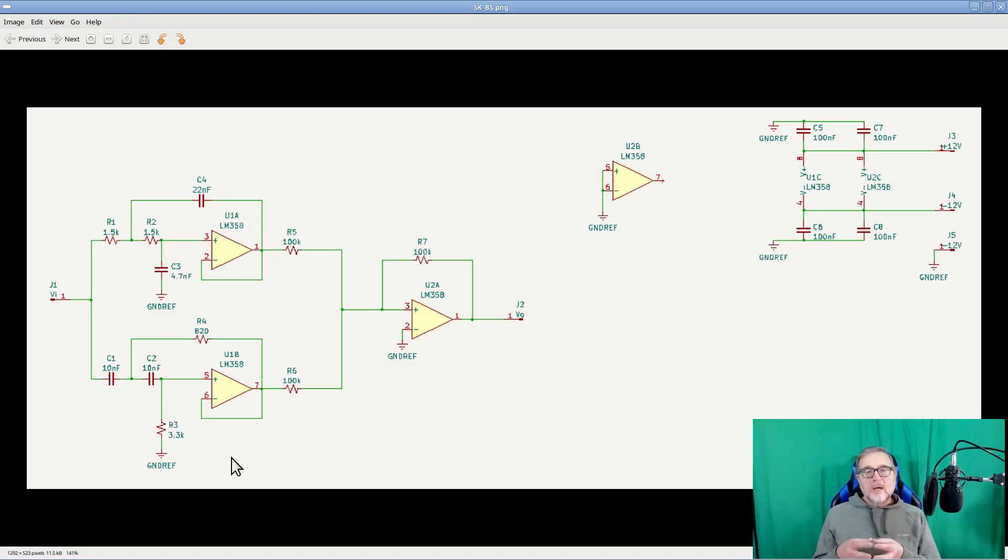Since I used two LM358 dual op-amps, I had an extra amplifier. To prevent it from affecting the rest of the circuit, I connected its inputs to ground. On the far right, we see instead the power supply of the op-amps, along with the capacitor filters.